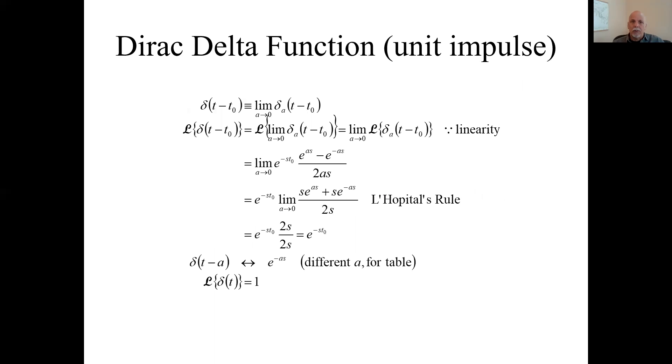Now we'll define the Dirac delta function as the limit of that unit pulse as the width goes to zero, or as the half width goes to zero. So the Laplace transform of the Dirac delta function, here's the notation for the Dirac delta function. We get rid of this subscript A. This is a pulse, this is the impulse, the Dirac delta function.